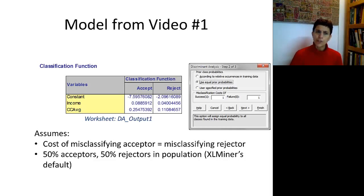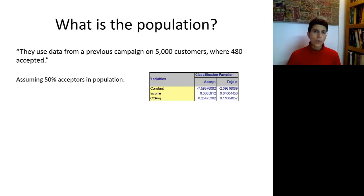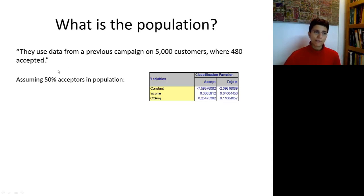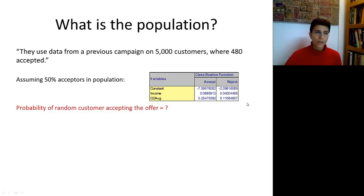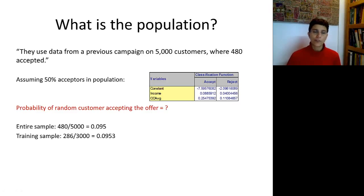So how can we adjust this if we don't want to make those assumptions? One option is to use 480/5,000 = 0.095 as a reasonable estimate of the proportion of acceptors in the population. Another option is to use only the training set: among 3,000 records, 286 people accepted, giving 286/3,000 = 0.0953. To recompute the classification functions based on these numbers, we choose the option in XLMiner to use prior class probabilities according to relative occurrence in training data.